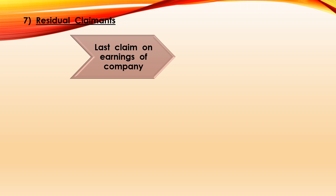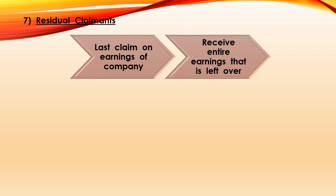The seventh feature is residual claimant. The term residual claimant means last claim on the earnings of the company. Equity shareholders, being the real owners, are called residual claimants as they are the last to receive earnings of the company after payment of all expenses, taxes, dividend to preference shareholders, etc. However, they enjoy the benefit of saving the entire leftover earnings, and sometimes these leftover earnings could be really very high. As they are the last to receive earnings, they are called residual claimants.